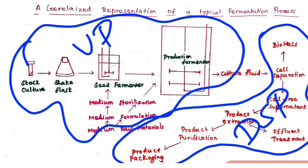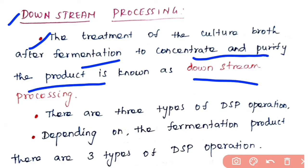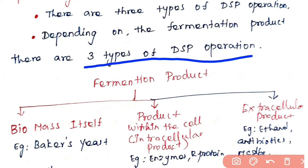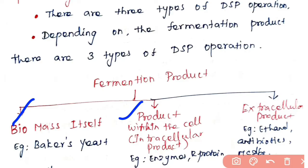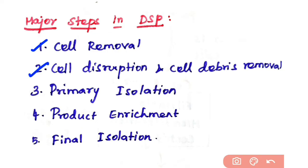After harvesting, purification steps come under downstream processing. Downstream processing is the treatment of the culture broth after fermentation to concentrate and purify the product. Depending on the fermentation product, there are three types of downstream operation: one is biomass itself — where the cell is the product, such as baker's yeast; second is intracellular product, such as enzymes and recombinant proteins; and third is extracellular product present in the media, such as ethanol, antibiotics, and monoclonal antibodies. Major steps include cell removal, cell disruption, cell debris removal, primary isolation, product enrichment, and final isolation.